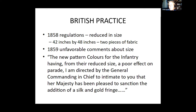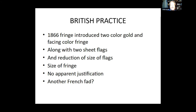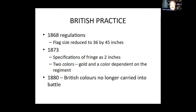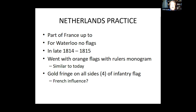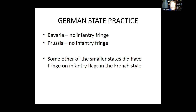British practice: the British didn't copy the French, at least not for a while. They started to reduce the flags inside the regiment. Finally in 1859, the flags got so small that Her Majesty complained about them and said, 'Why don't you put a fringe on them?' And so it was written and so it was done. By 1866, they had two-color golden facing fringes. No justification is given beyond that — was it another French fad? Netherlands didn't have flags at Waterloo, but as soon as they got flags they started to copy the French. Some German states had no fringe and never copied the French; smaller states under French influence did.